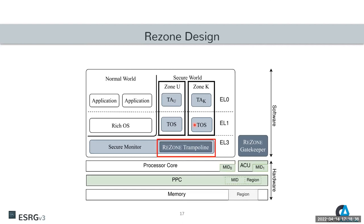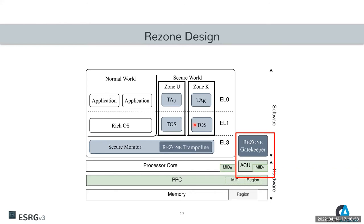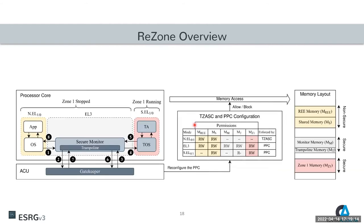We have the Gatekeeper running on the ACU. The Trampoline and Gatekeeper coordinate to securely configure the PPC. The PPC sits between the core and memory and enforces the actual access control policy. Looking at how ReZone works from a high-level view: on the left we have the execution flow of a call from the normal world to a zone; in the middle, the access control policy that is established; and on the right, the memory layout of the system.